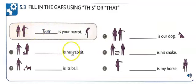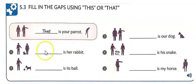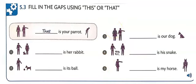Write sentences 1 through 5 using 'this' or 'that.' Pause the video. When you come back, I'll play the audio so you can practice speaking.